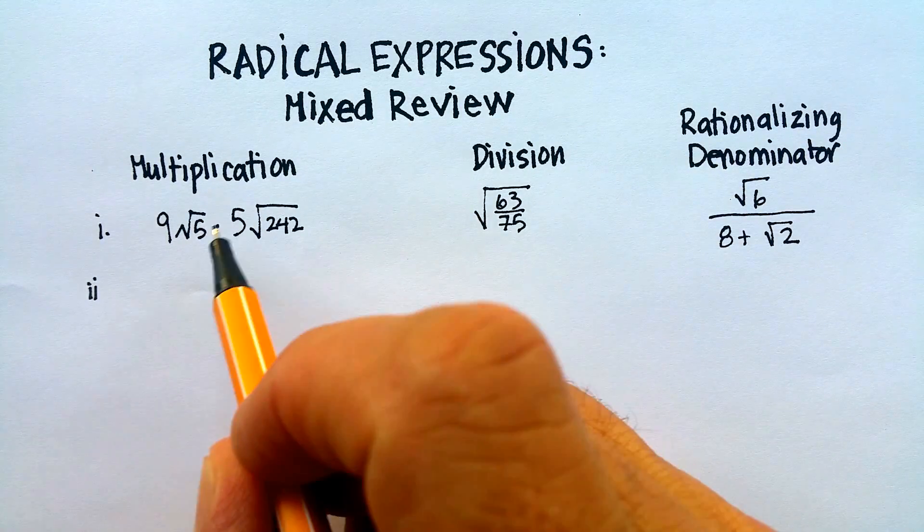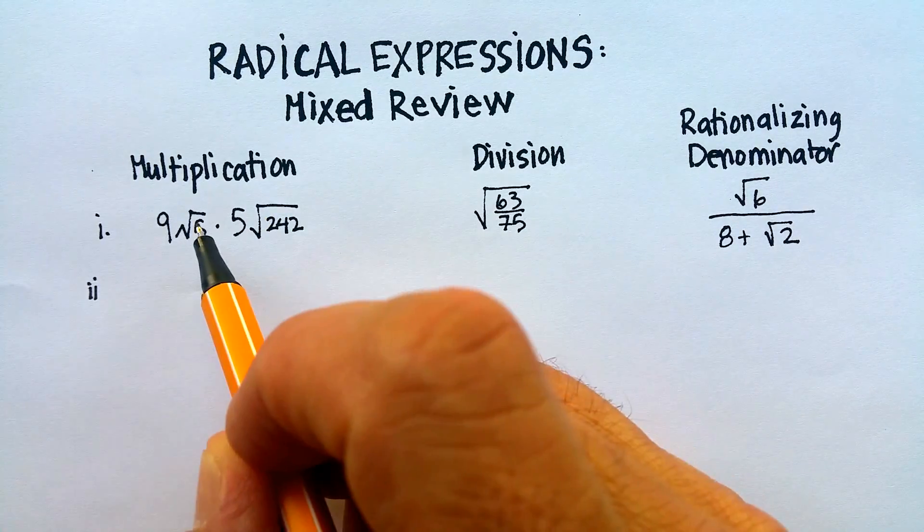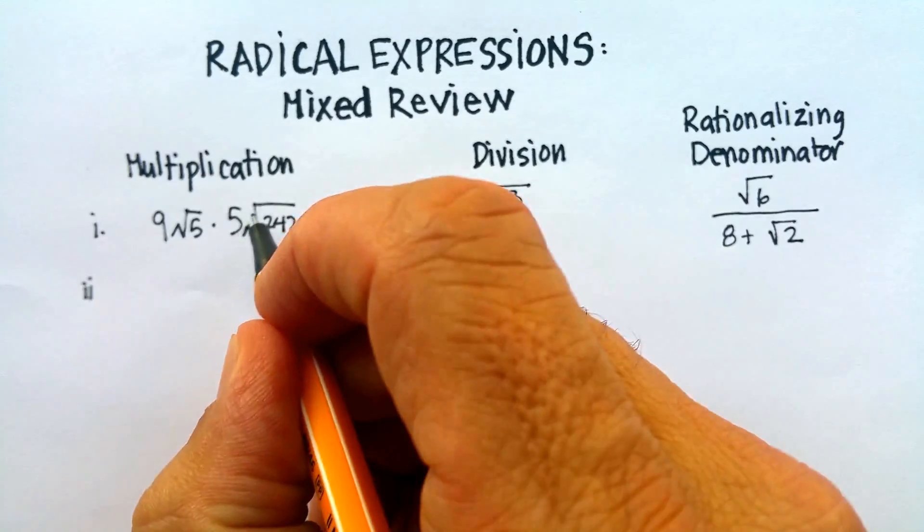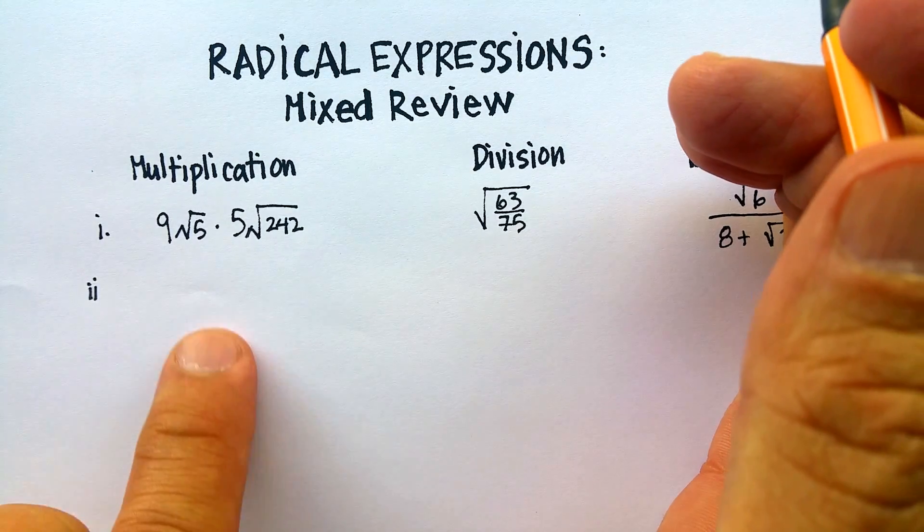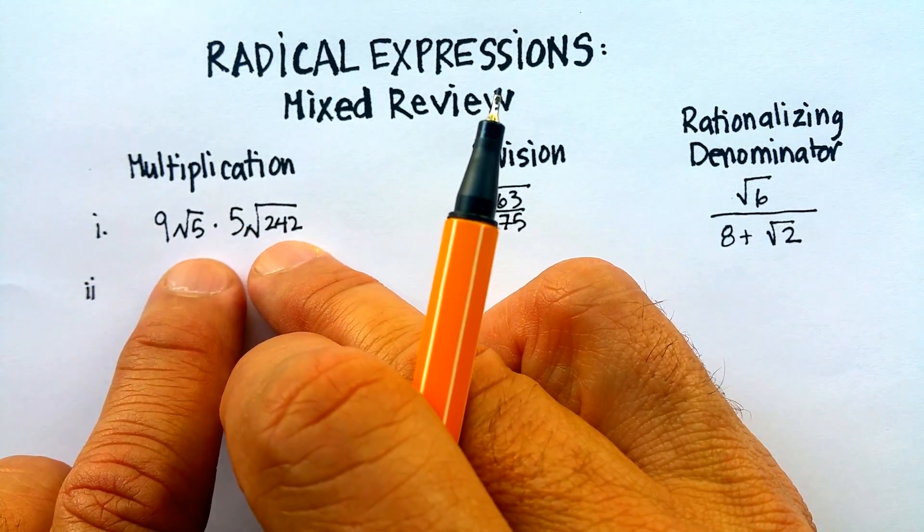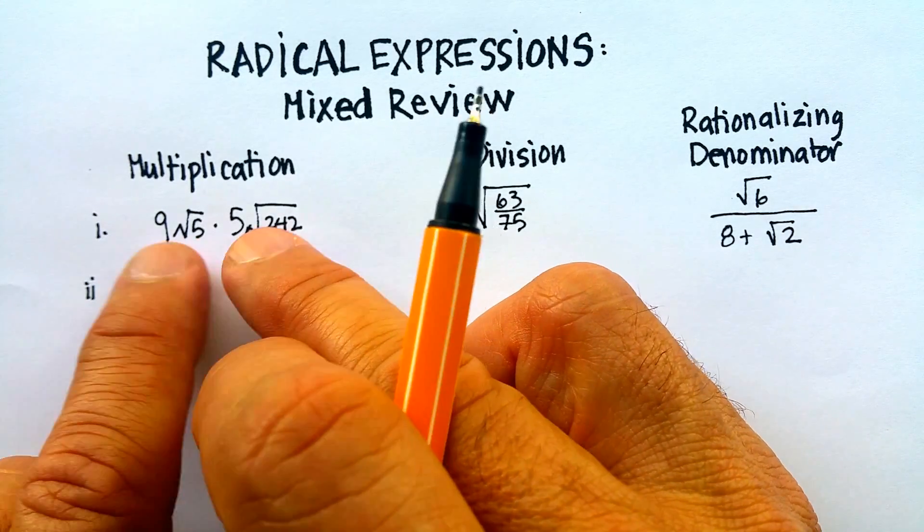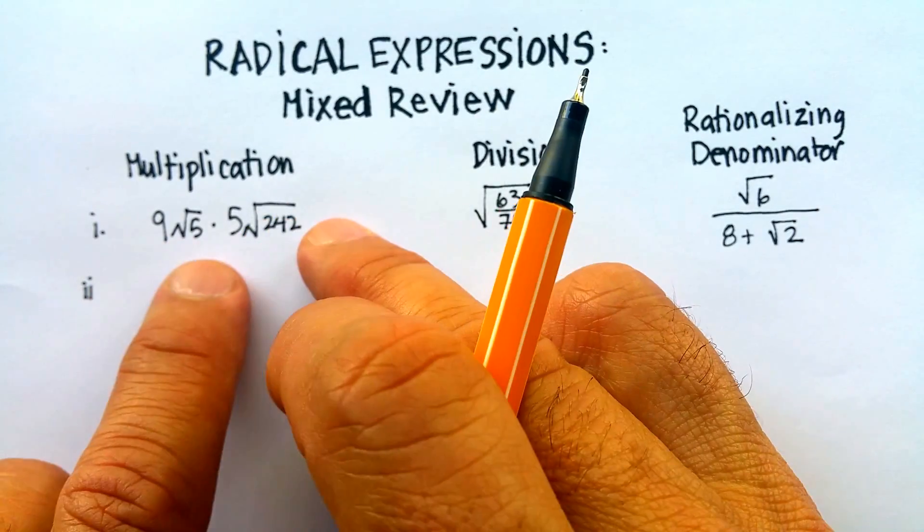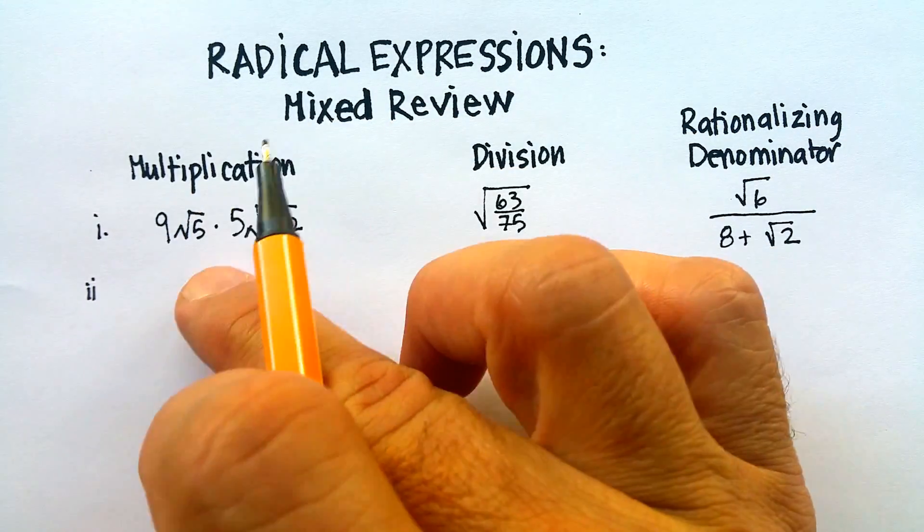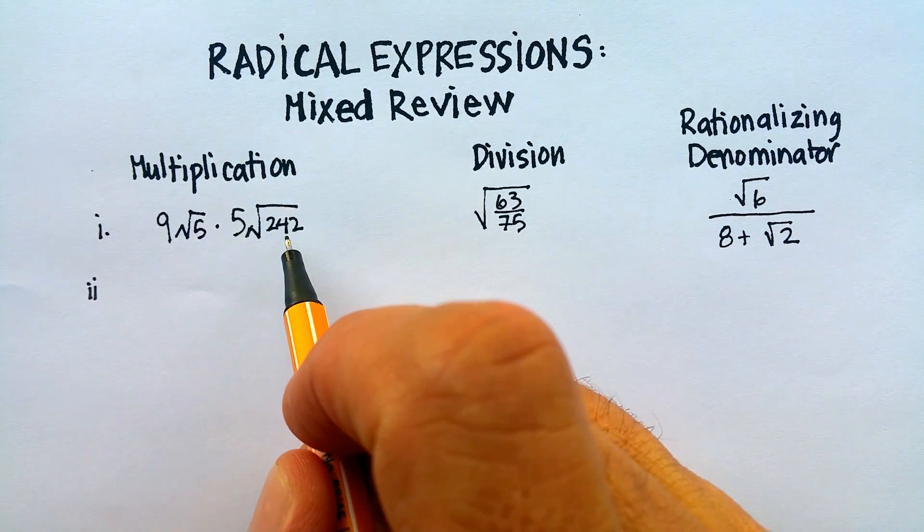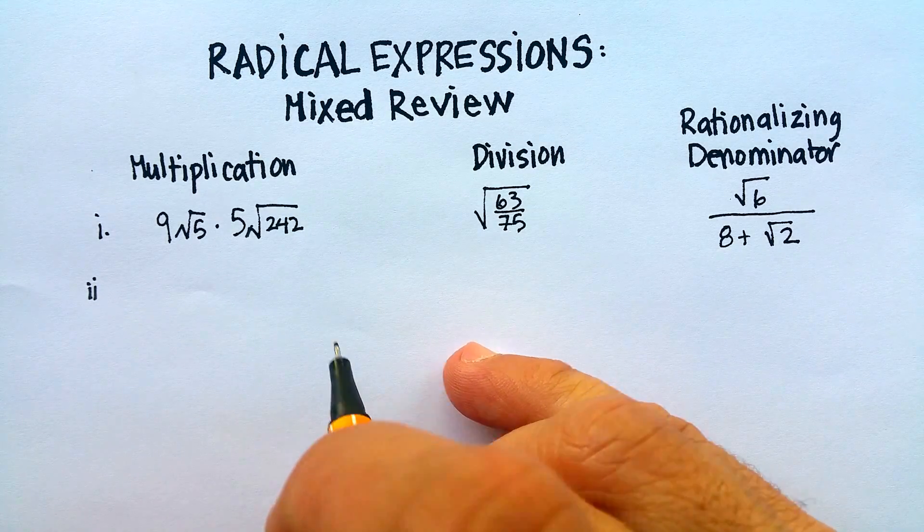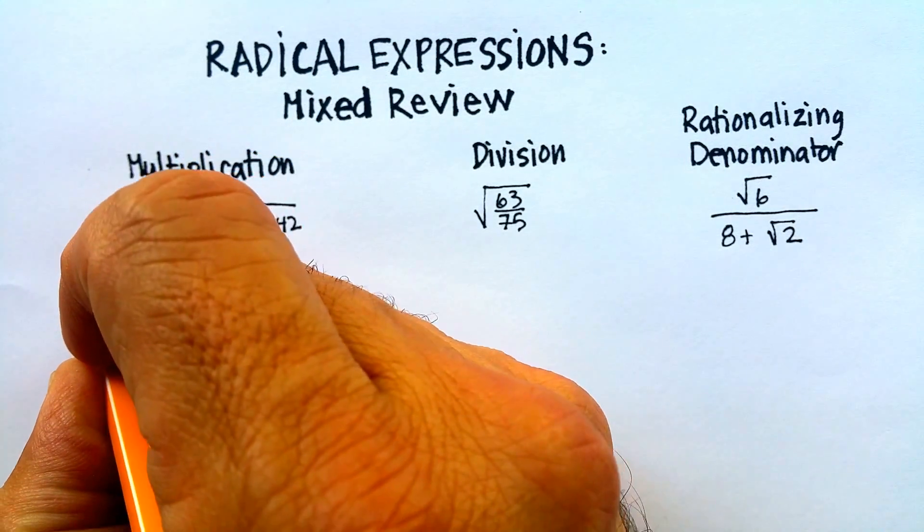One of the things I see here is that both of the radicals are square roots. They'd both be like an index of 2 up here if there were one. The other thing I noticed is they both have coefficients. Here's a 9 and here's a 5. And remember, when you multiply radicals, you multiply like type of terms. But even before that, I see that 242 can probably be factored even further. So that's what I'm going to do first.